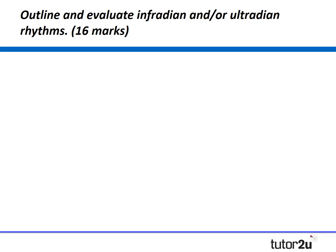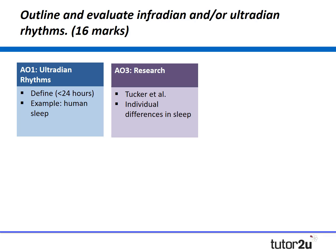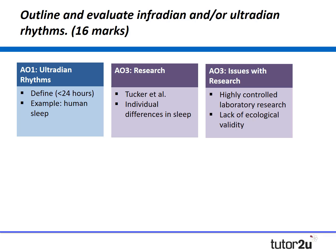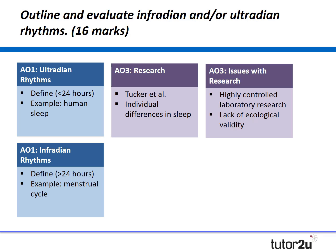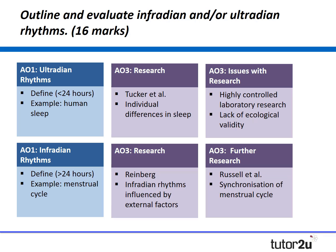For this particular essay I might apply the following structure: I might outline ultradian rhythms followed by two different evaluation points — one drawing on research support by Tucker and then one looking at the issues with research in this area. Then I might go on to outline infradian rhythms followed again by two evaluation points, one drawing on research by Reinberg and a second looking at further research by Russell, which we introduced in the last video.